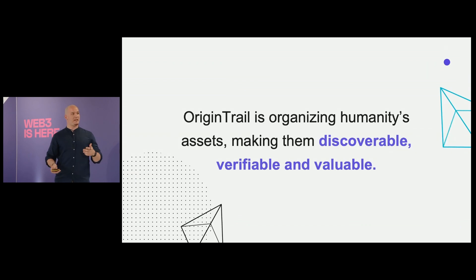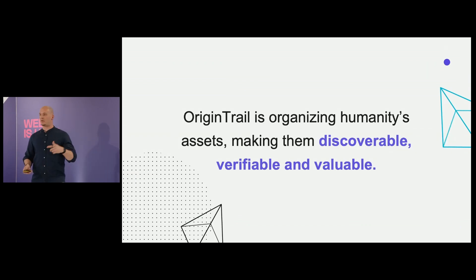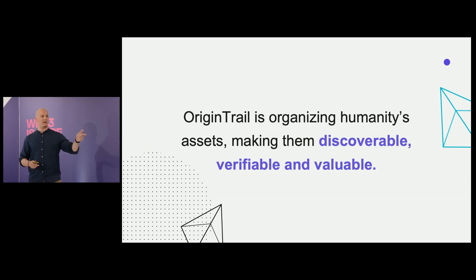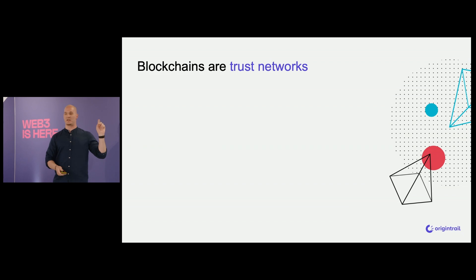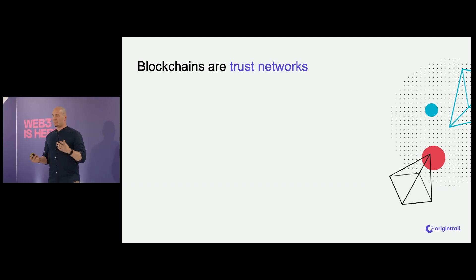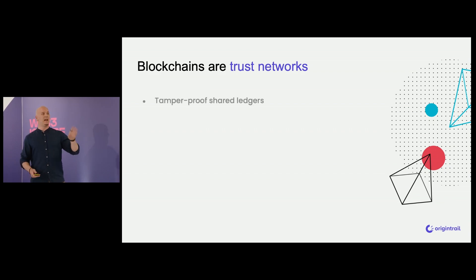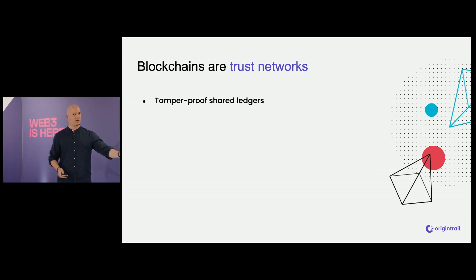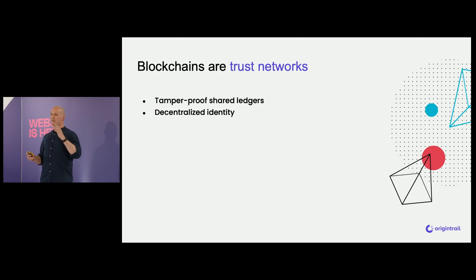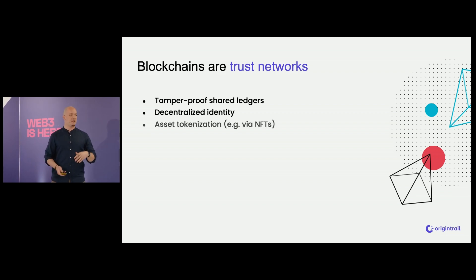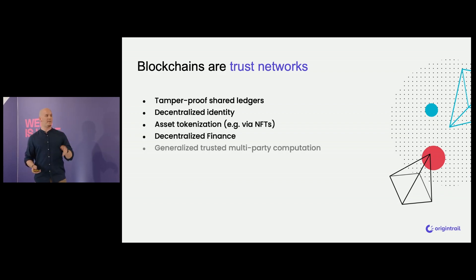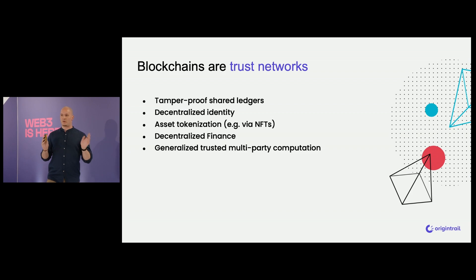So how? We at OriginTrail, our mission is to organize humanity's assets and make them discoverable, verifiable, and valuable. The two tools we use: tool number one is blockchain. These are trust networks — great for tamper-proof shared ledgers, great for DIDs (decentralized identity), tokenization, DeFi, and trusted multi-party computation. You can put logic in a smart contract and be sure it will execute for all parties.